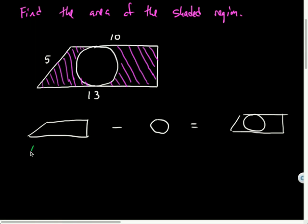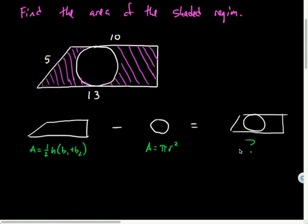The area of a trapezoid formula, A is equal to one half the height times the sum of the bases. The area of a circle is equal to pi r squared, and the area of this is just, I wouldn't have a formula for that. It's just going to be this guy minus that.